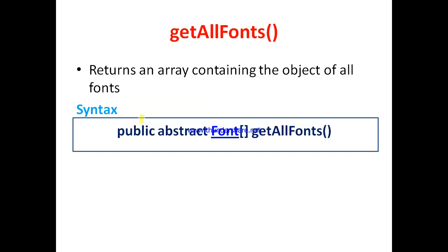The next method is getAllFonts(). This method will return an array containing the objects of all fonts present on the local machine. This method also returns an array, but it returns an array of Font objects. The syntax has a Font array return type: Font[] getAllFonts().